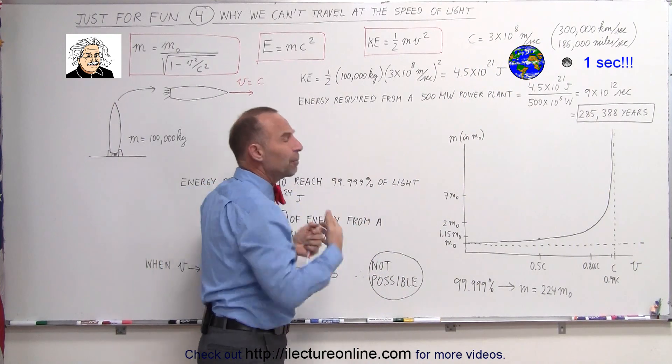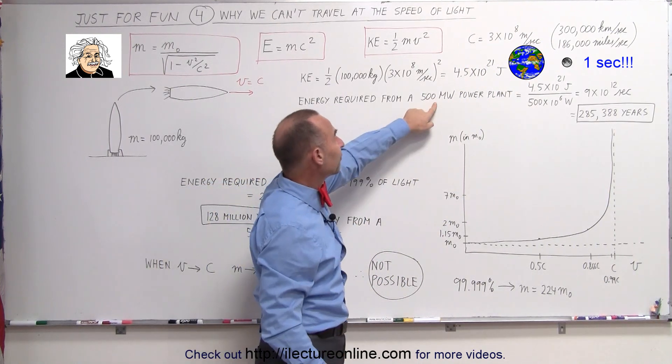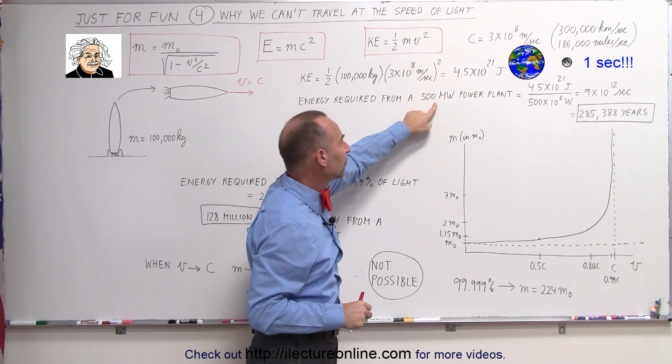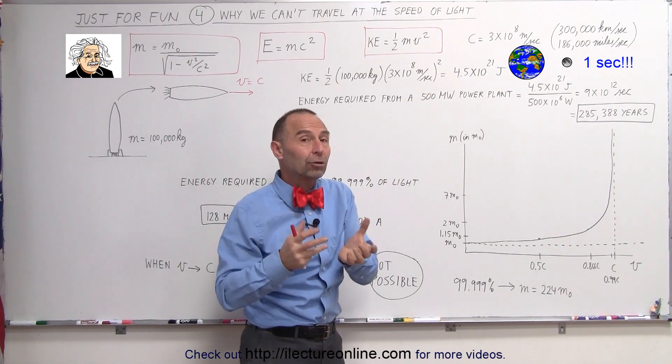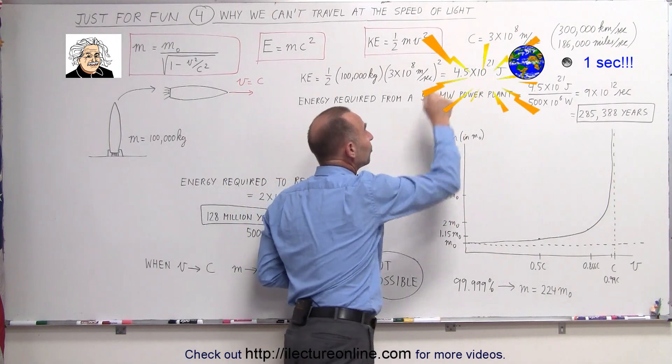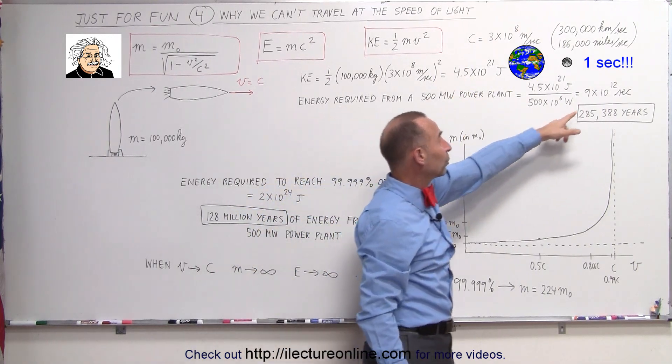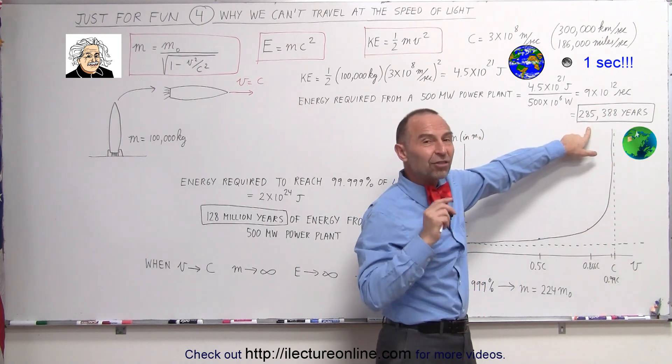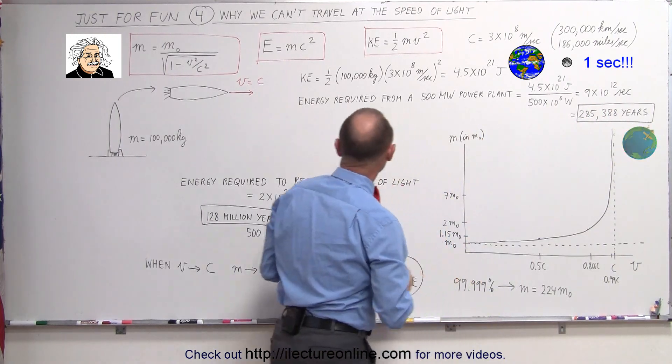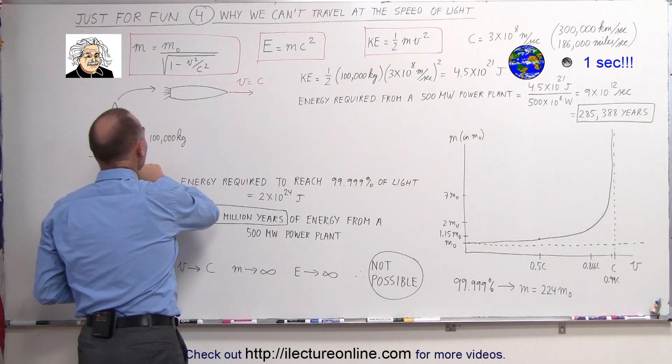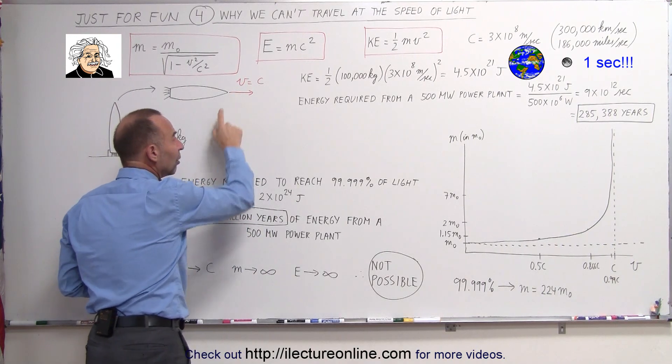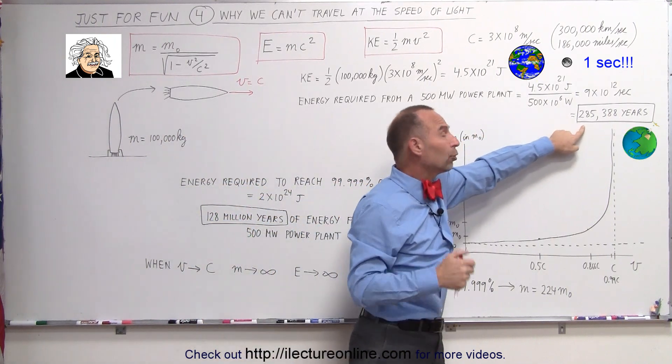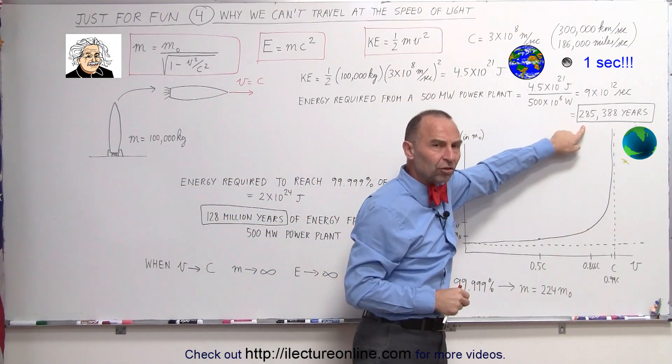Assuming that you have a typical power plant that produces 500 megawatts, 500 million joules per second of energy, how long would it take for that power plant to produce the energy required? Well, it turns out it would take 9 trillion seconds or 285,000 years. The energy you need to take a spaceship and get it up to the speed of light would require the energy of a 500 megawatt power plant to produce energy for 285,000 years to do so.